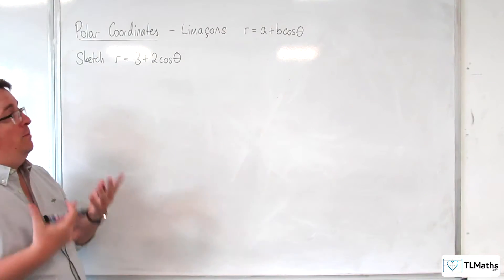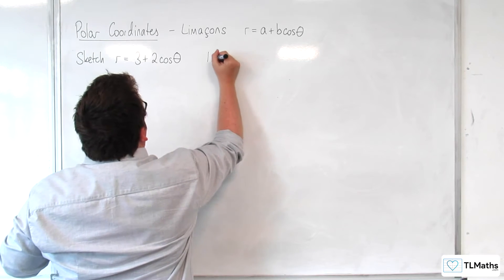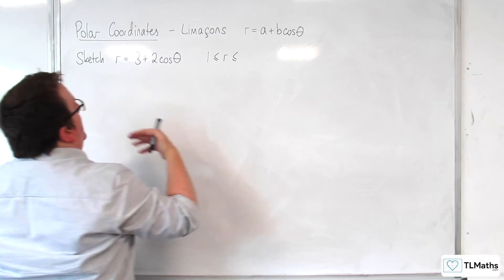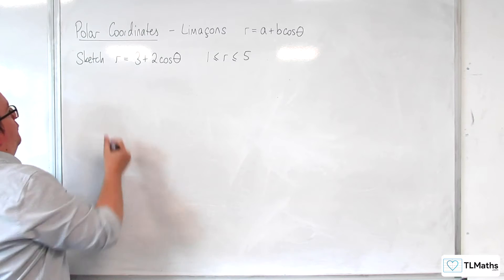So when cosine theta is minus 1, we're going to get 3 take away 2, which is 1, and when cosine theta is 1, we're going to get 3 plus 2, which is 5. So r is going between 1 and 5.